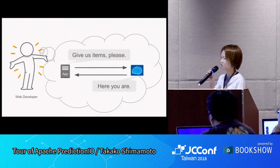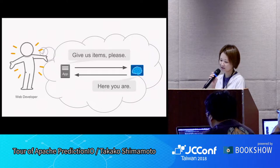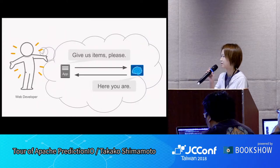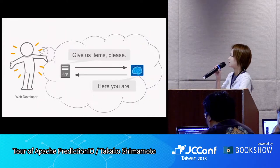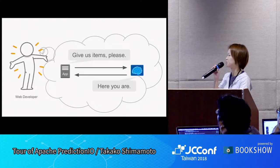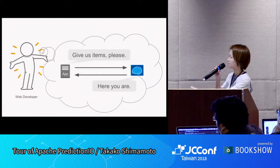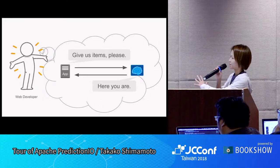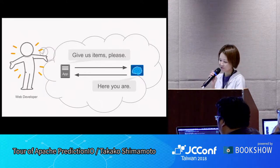Ideally, a web application sends a user ID and it will return recommended items. Thus, it makes a clear distinction between the role of the web developer and the machine learning developer, so they will both be happy with each other.